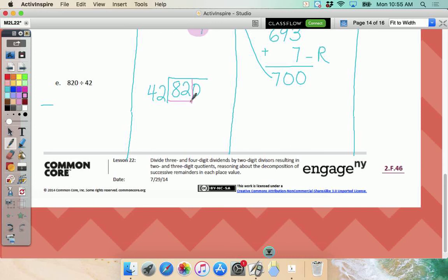So let's do E. 820 divided by 42. Can I use that 82? So that means I'm going to need two of these. And can I skip count by 42? Why not? Yeah, because the two will go up by another two. So let's skip count by 42s. 42, 84, 126.